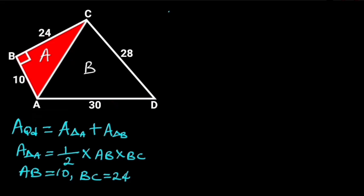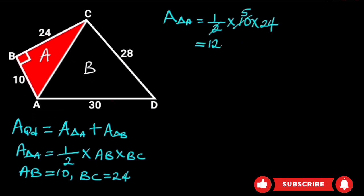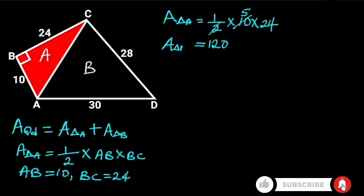If we plug in these values in the equation, the area of triangle A will be 1 over 2, times 10, times 24. 10 divided by 2 is 5, and we are left with 5 times 24, which is equal to 120. Hence, the area of triangle A is equal to 120 square units.